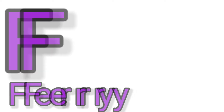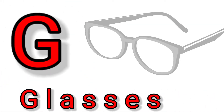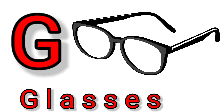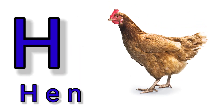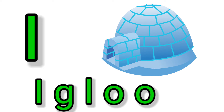F is for Fairy. F-F-Fairy, F-Fairy, F-Fairy. G is for Glasses. G-G-Glasses, G-Glasses, G-Glasses. H is for Hand. H-H-Hand, H-H-Hand, H-Hand. I is for Igloo. I-I-Igloo, I-I-Igloo, I-Igloo. J is for Jelly.